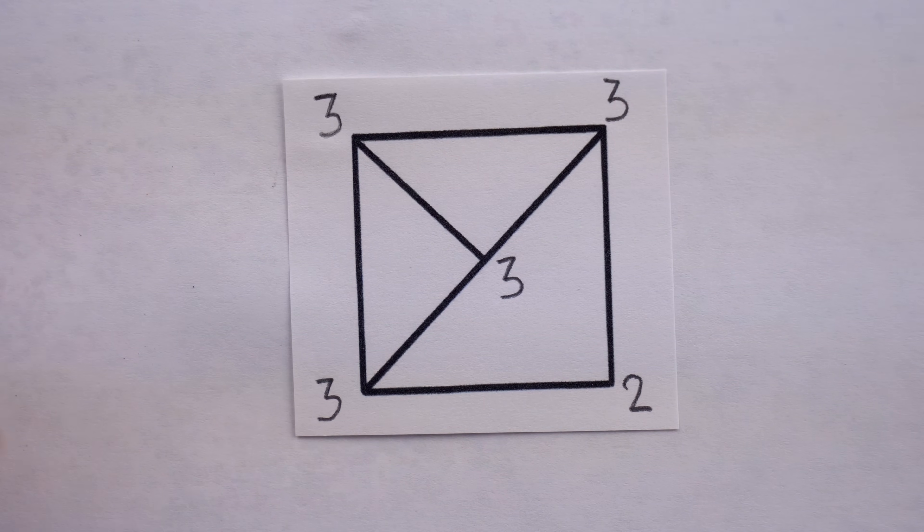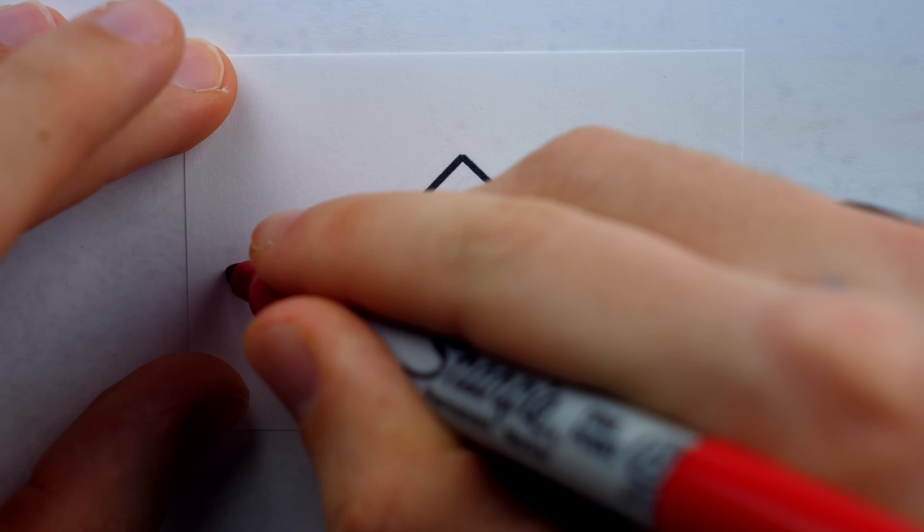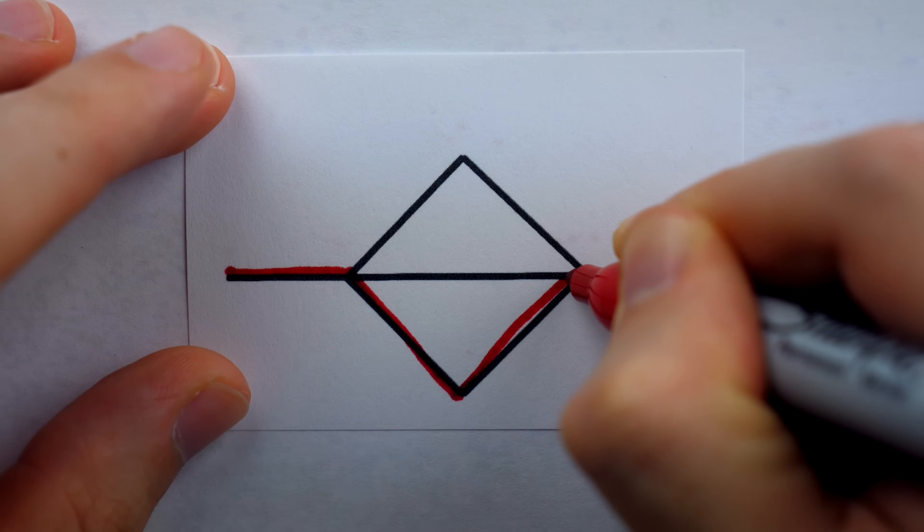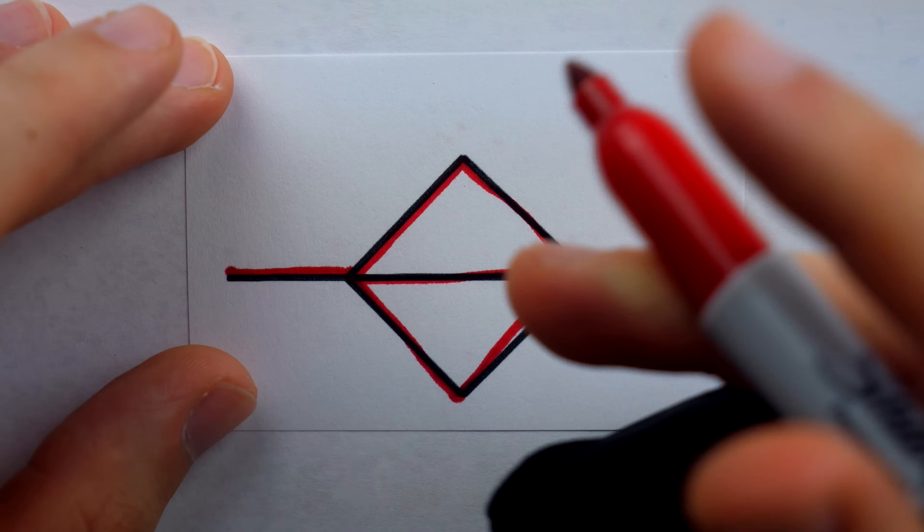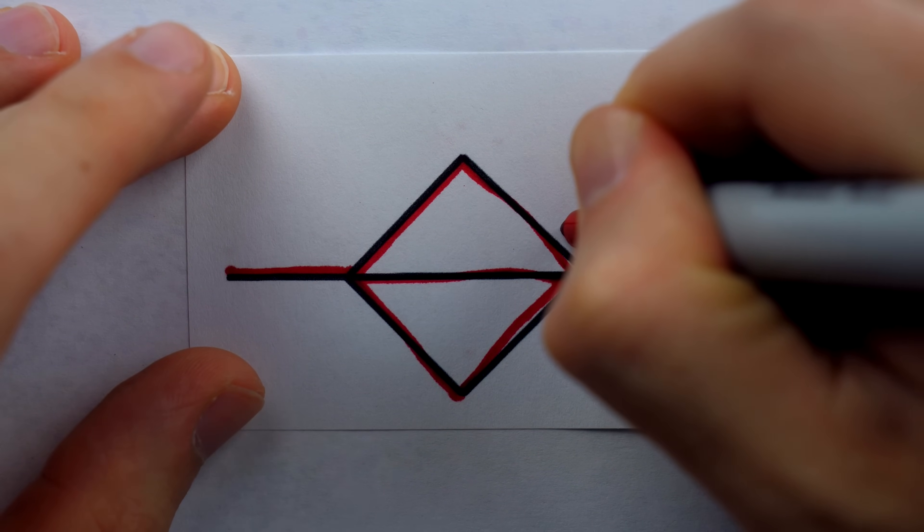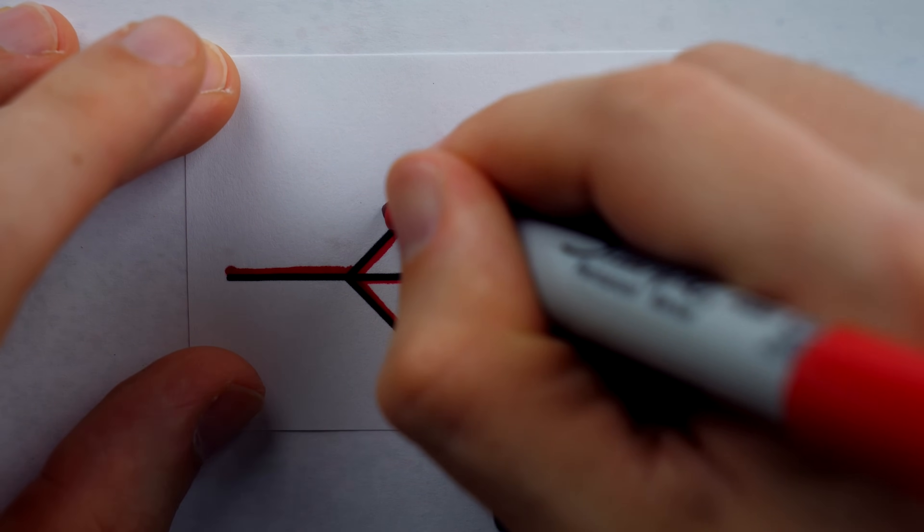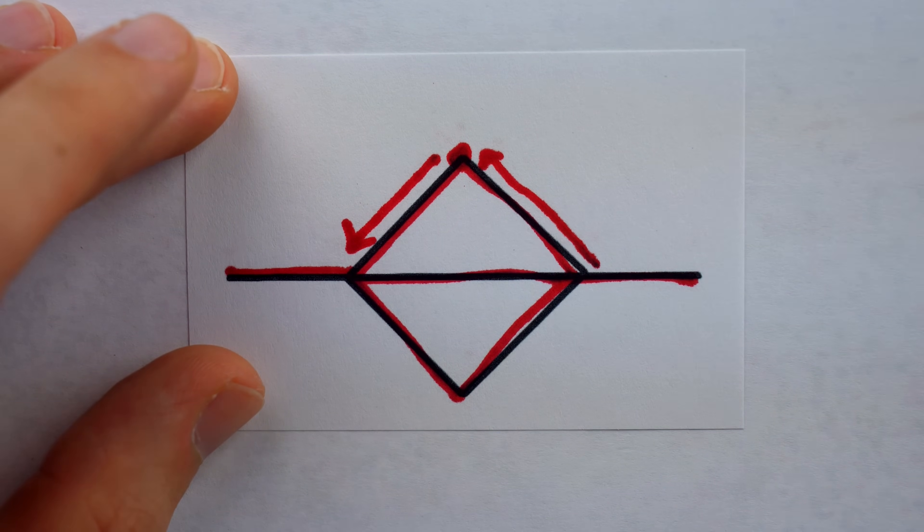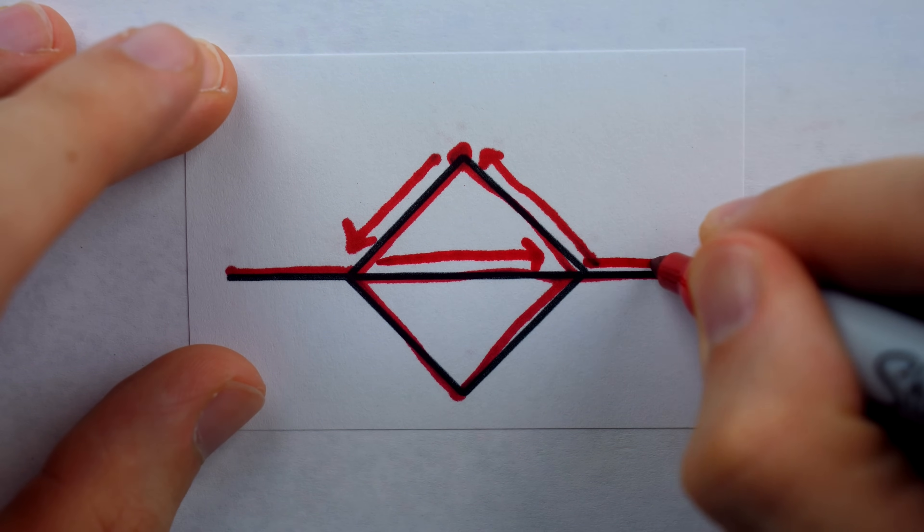Now, we've already spoiled the fact that the challenge is impossible on this figure, but imagine a figure where the challenge is possible. Here's such an example. Let's think about how many segments must be touching each point for this to be possible. Certainly, most of the points must be touching an even number of segments, a multiple of two.